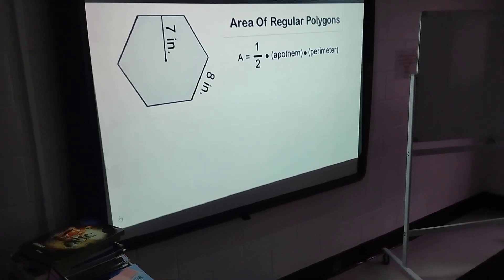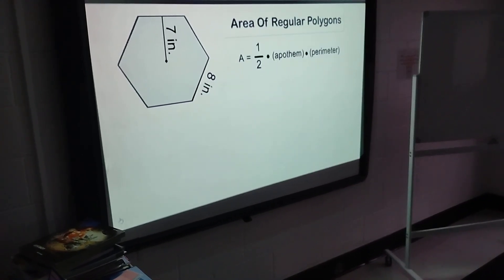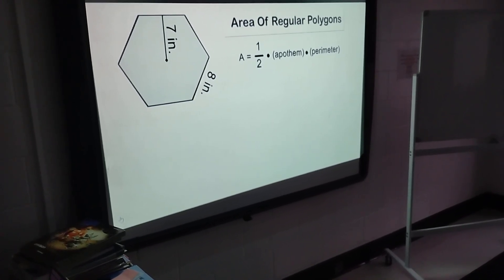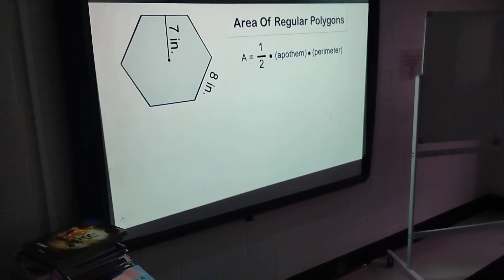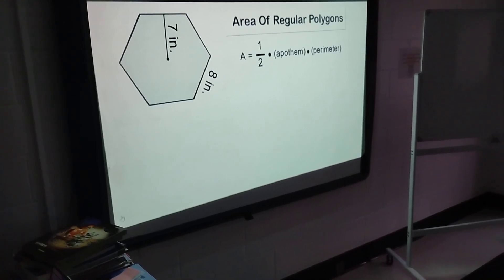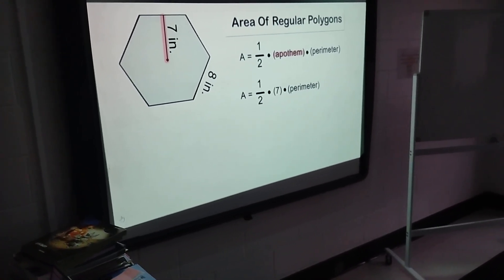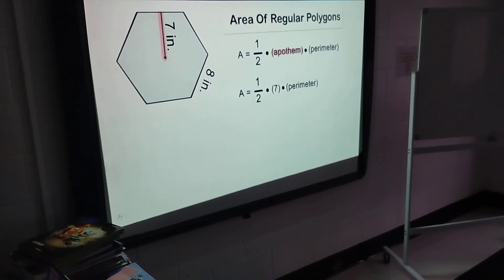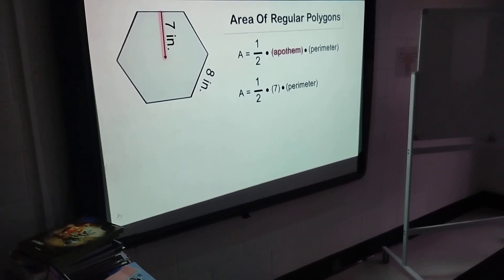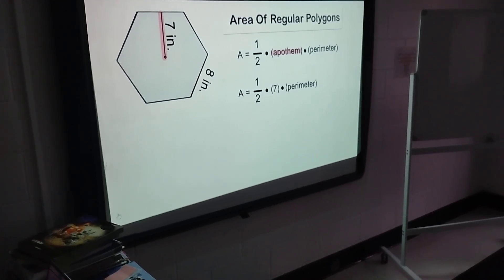We are going to use a regular hexagon to demonstrate this area formula. First, we need to figure out the length of the hexagon's apothem. The apothem in this case is 7 inches. The apothem is the distance from the center of the polygon to the midpoint of any side.